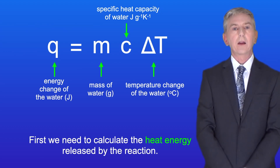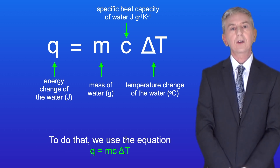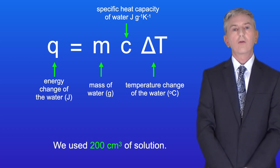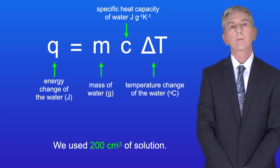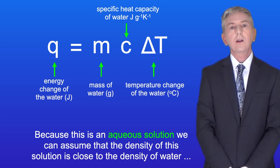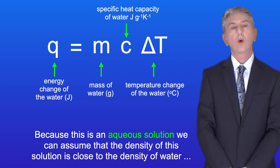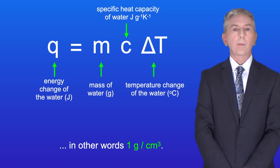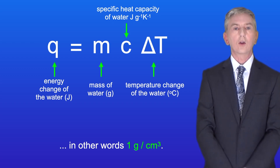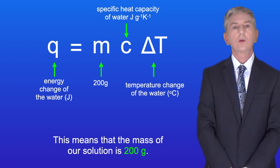First we need to calculate the heat energy released by the reaction. To do that we use the equation q = mcΔT. We use 200 centimeters cubed of solution. Because this is an aqueous solution, we can assume that the density of this solution is close to the density of water — in other words, one gram per centimeter cubed. This means that the mass of our solution is 200 grams.